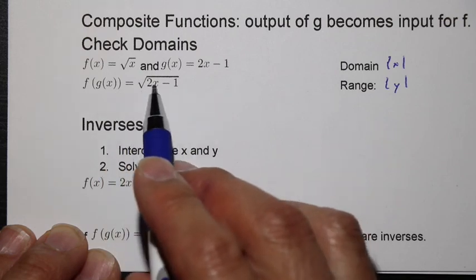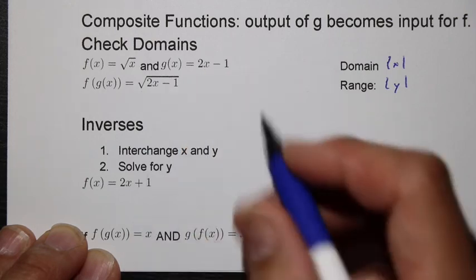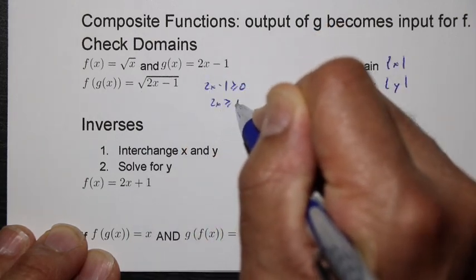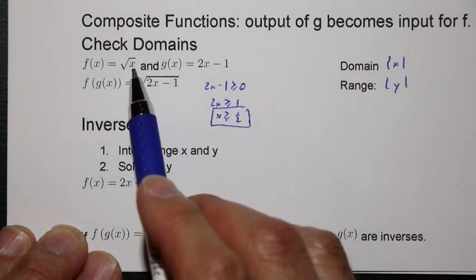But it's going to be, here this is replaced, x is replaced with 2x minus 1. Therefore, your 2x minus 1 has to be greater than or equal to zero. 2x has to be greater than 1, so x has to be greater than a half.